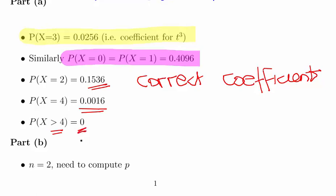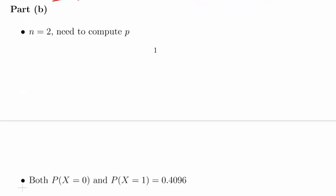That gives us a bit of a clue there. There's no terms greater than t⁴. So what we have here is the sample size. So n is actually equal to 4, and what we have to do here is compute p.